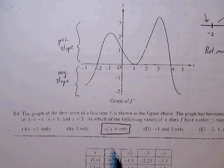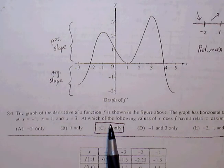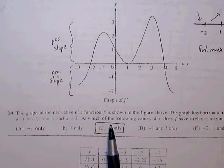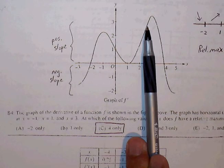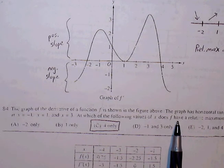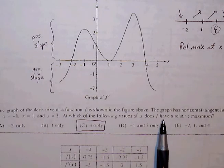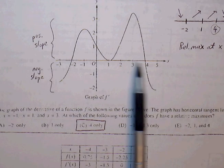The graph of the derivative function is shown in the figure. The graph has horizontal tangent lines at x equals negative 1, x equals 1, and x equals 3. At which of the following values does the graph have a relative maximum? So we're looking at the f prime graph.